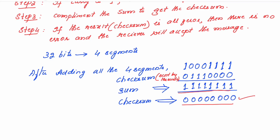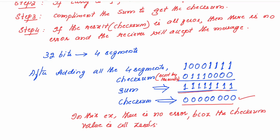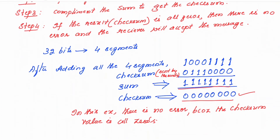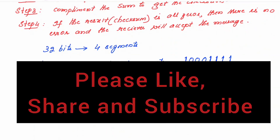If the result checksum is all 0s, then there is no error and the receiver will accept the message. So in this example, there is no error. How is the receiver deciding that there is no error? Because the checksum value is all 0s. If at any point the checksum value obtained has got ones in between, then the receiver will know that the data got corrupted during transmission and will make a request to the sender to retransmit the data. This is how the checksum technique is used at the sender side and the receiver side to detect errors during transmission. Hope the topic is clear. If you find this topic useful, please like, share and subscribe to my channel. Thank you, bye-bye and take care.